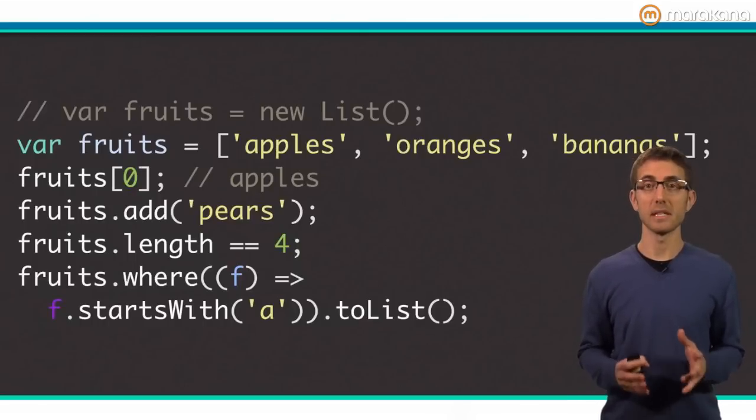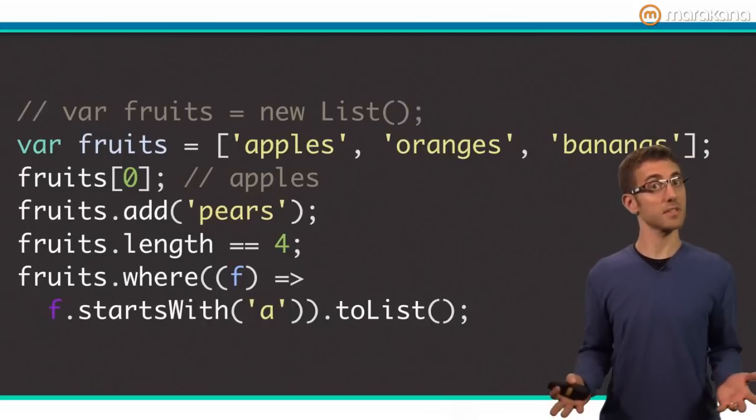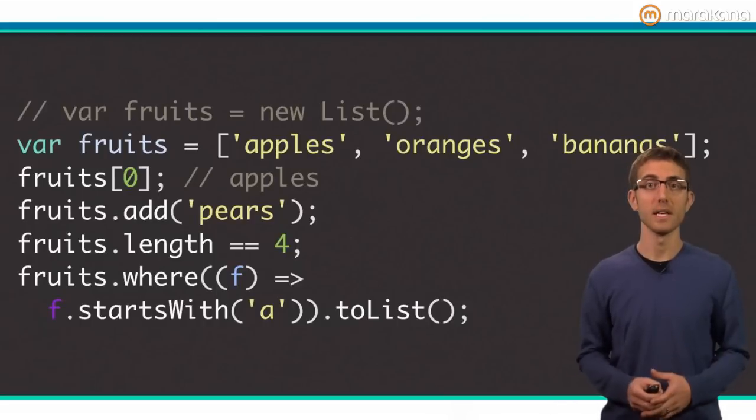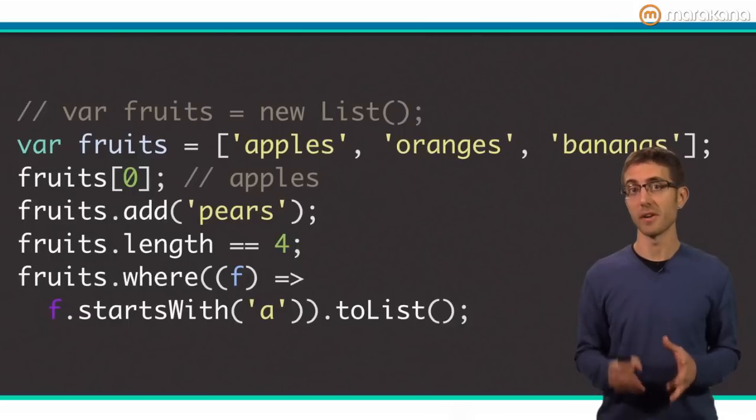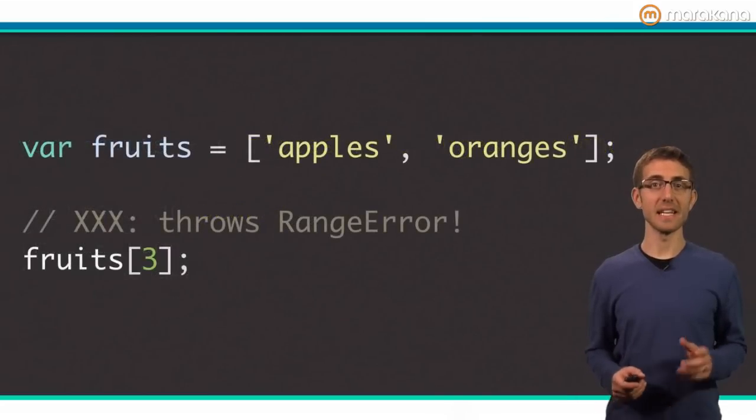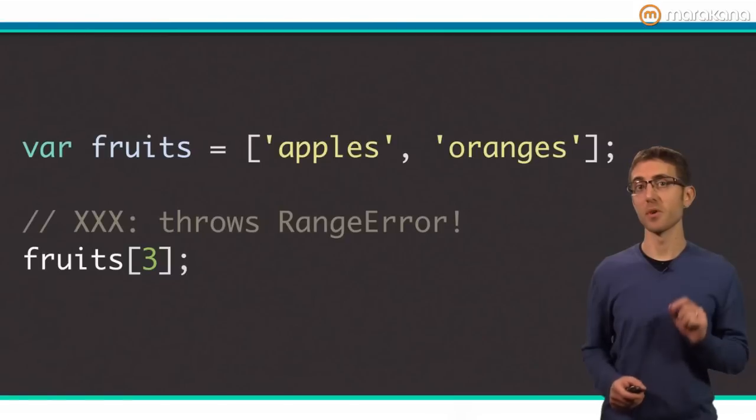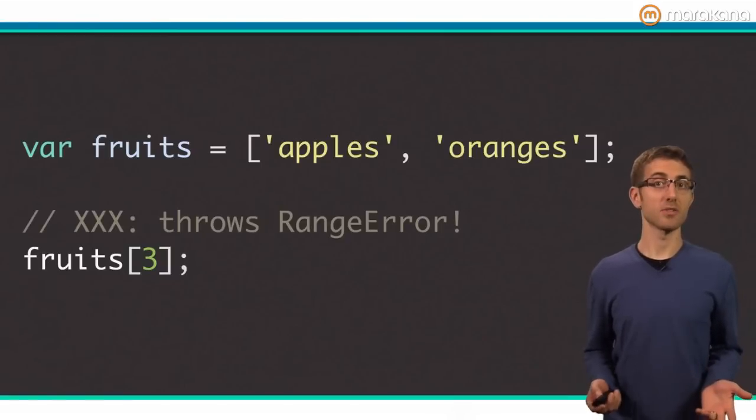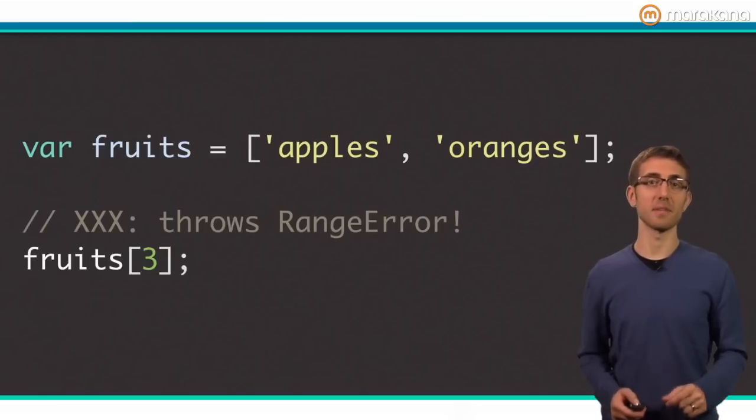Remember that lists implement collection, which extend iterable, so a list can be filtered, transformed, and more. You can see here an example of filtering the list for only items that start with the letter A. It's important to know that accessing an index that is out of bounds throws a range error. Dart doesn't keep on trucking. It tells you right away that something is wrong.